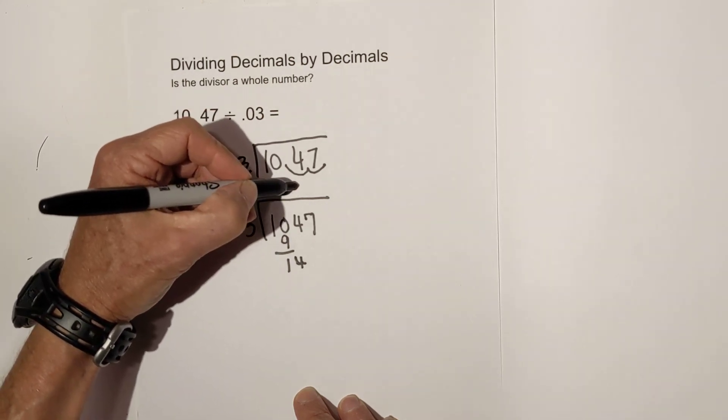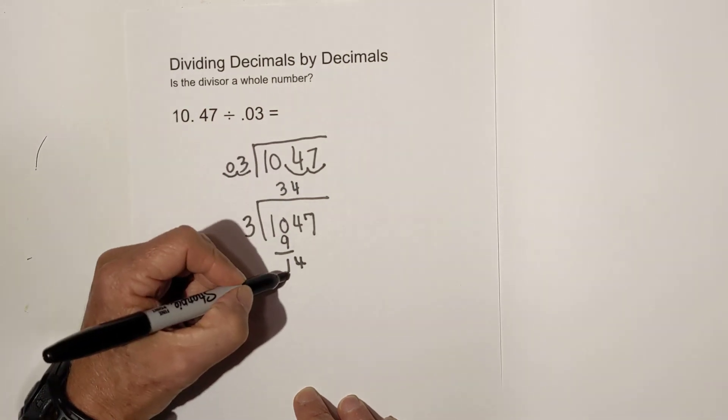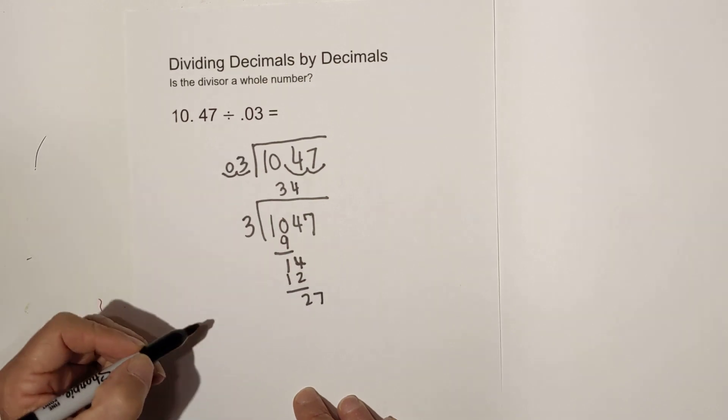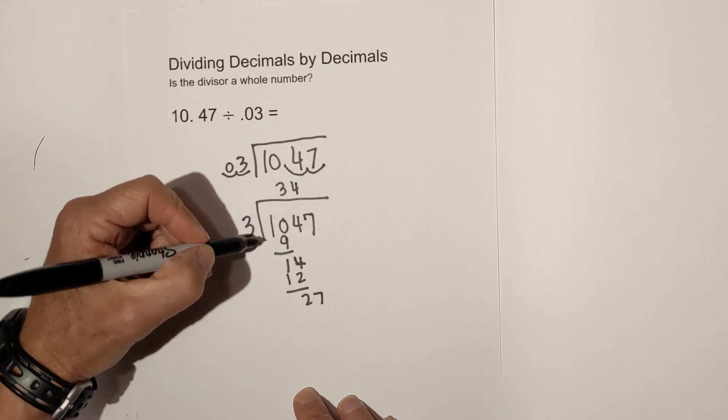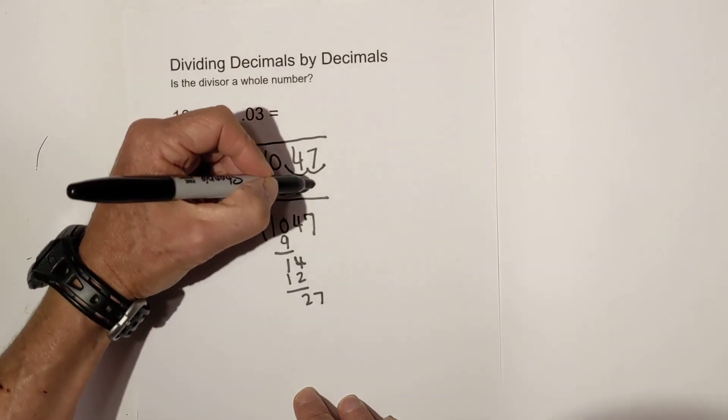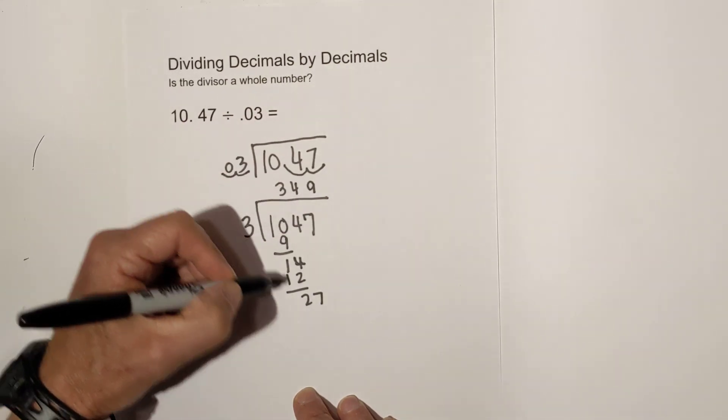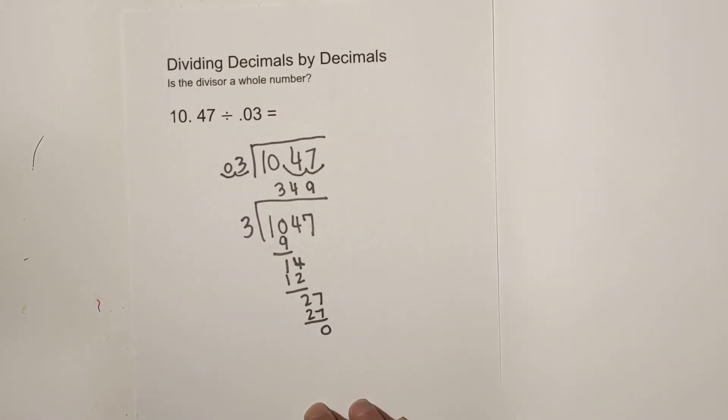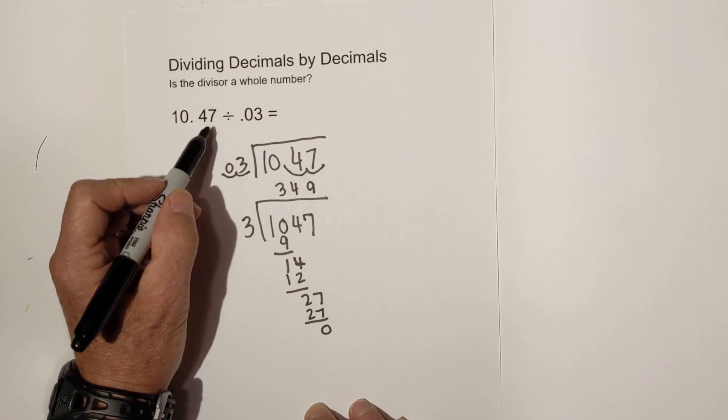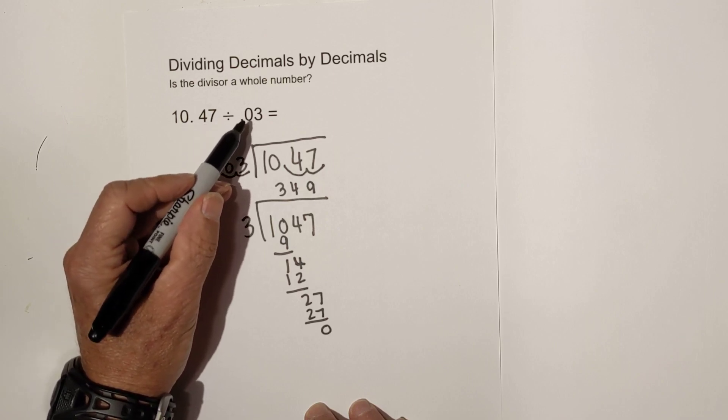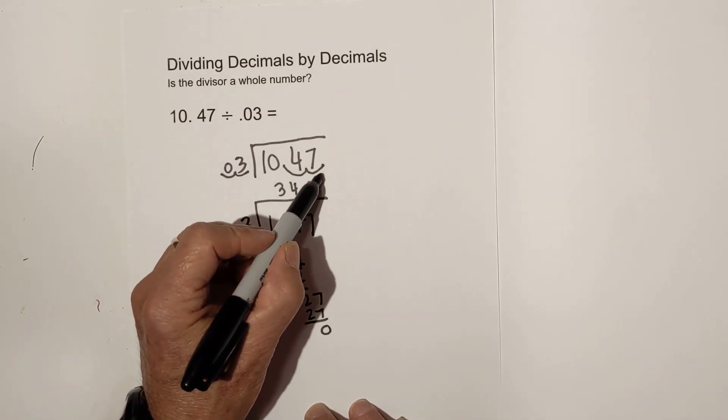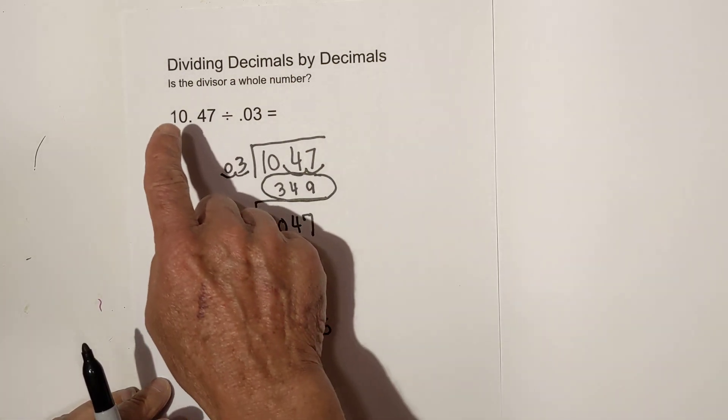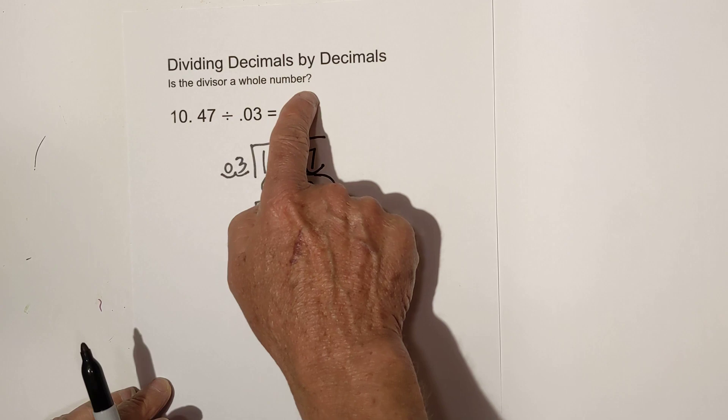And that is 12. Subtract, bring down the 7. And 3 goes into 27 nine times. 9 times 3 is 27. And we have 0 remainder. So 10 and 47 hundredths divided by 3 hundredths equals 349. And remember, you're asking the question, is the divisor a whole number?